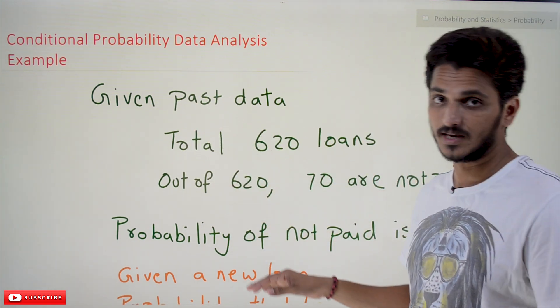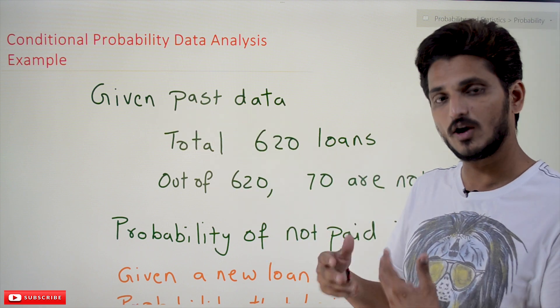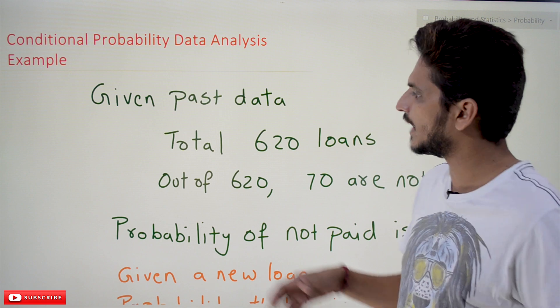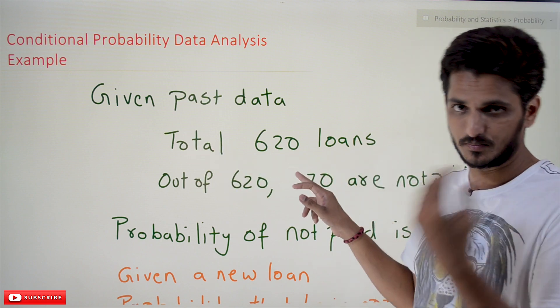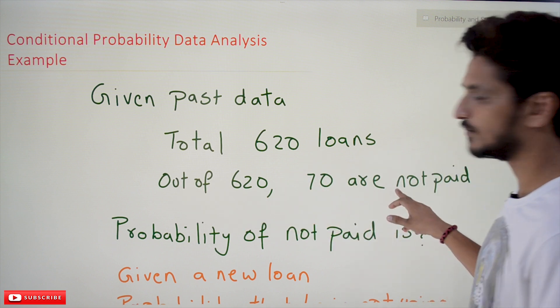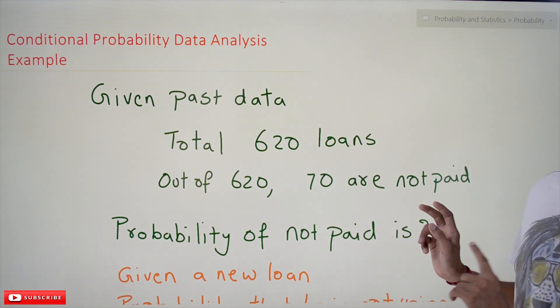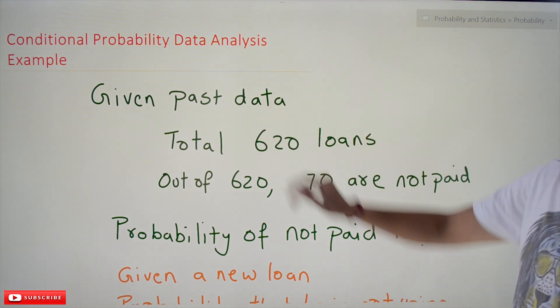Let's take a banking example. Given the past data - we have collected the previous data from the bank - the data says total 620 loans have been approved for different persons. Out of 620, 70 loans are not paid. This is the data we have from the previous bank year.